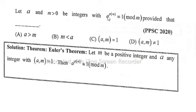zero be integers with alpha power phi of m is equal to 1 mod m, provided that... Solution: Euler's Theorem - Let m be a positive integer and alpha any integer with (alpha, m) is equal to 1, then